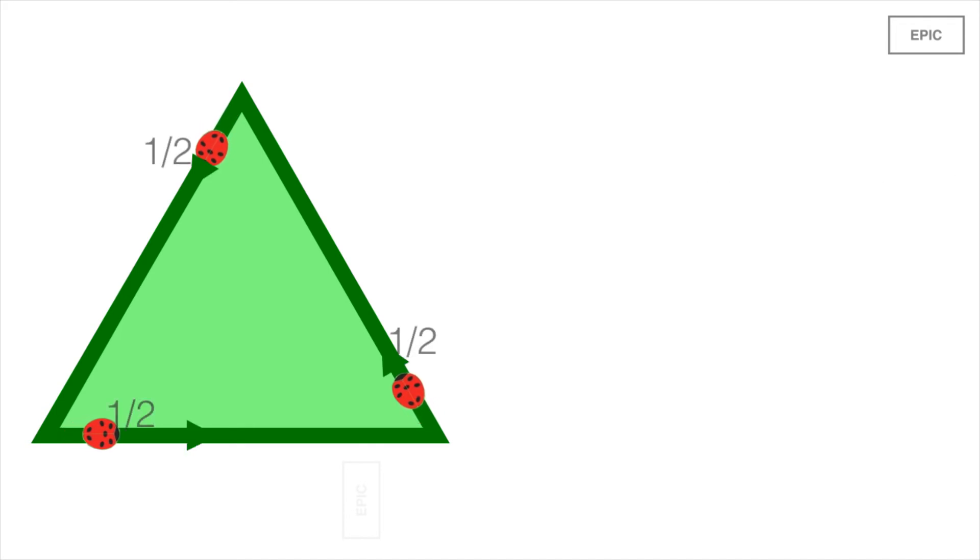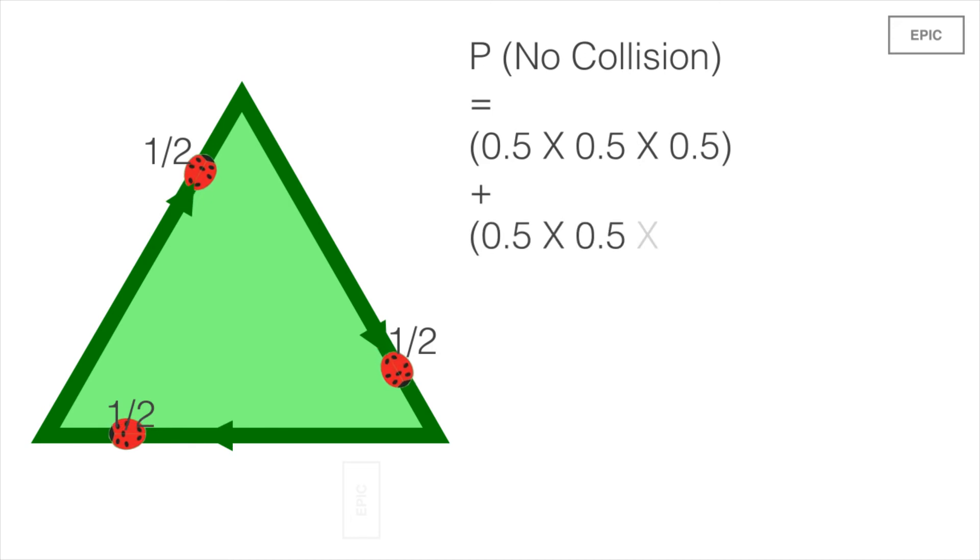The probability of choosing a specific direction is half as each bug has two choices. Hence the probability will be 1/2 multiplied by 1/2 multiplied by 1/2 plus 1/2 multiplied by 1/2 multiplied by 1/2. Thus the probability of bugs not colliding into each other is 0.25 or 1 by 4.